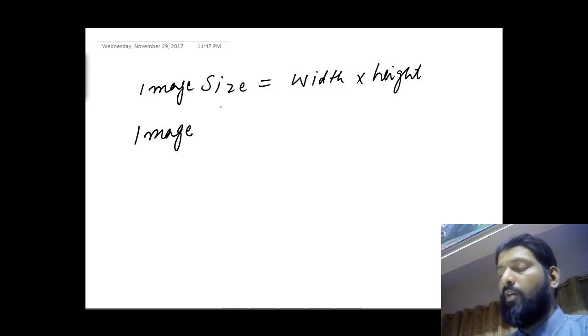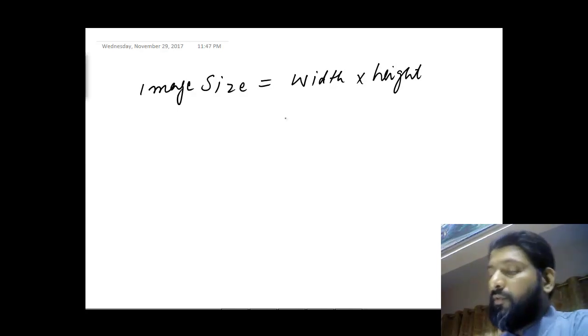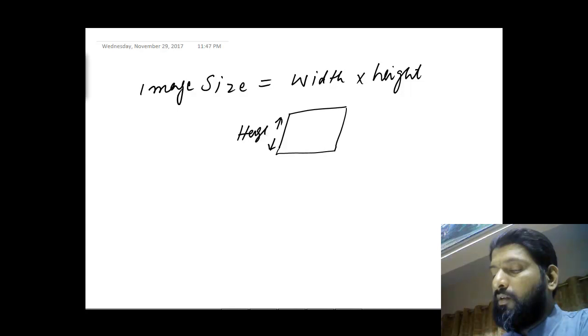Image, width into height. So let's suppose if the image size like this, we can measure this diagonally. The first one, this is the height, and this is the width.